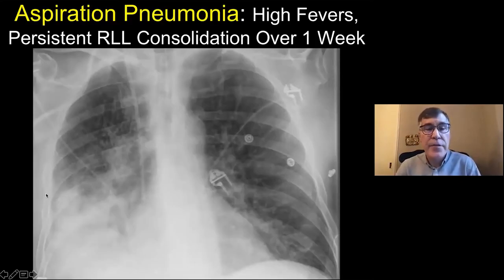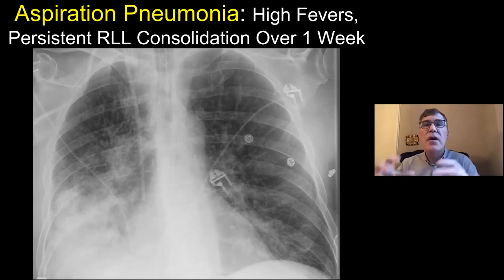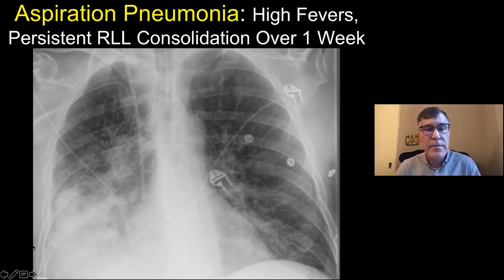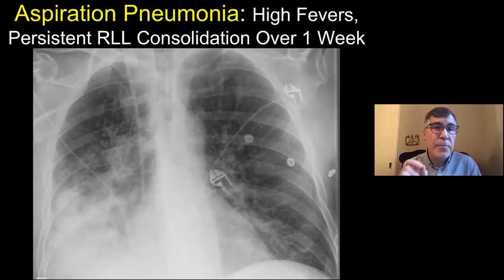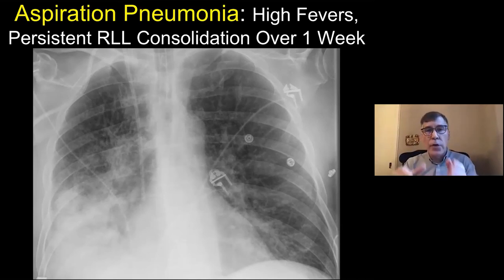Another patient with high-grade fevers: remember, aspiration pneumonitis gives you low-grade fevers, atelectasis gives you no fever, and aspiration-based infectious pneumonia gives you high-grade fevers. That can be a useful way to differentiate the three. That's a big consolidative aspiration-based pneumonia. Word of advice: aspiration pneumonia is almost always gram-negative bacteria. The so-called anaerobic etiology was from the 1950s with Skid Row bad dentition — we don't see that as much anymore. Aspiration pneumonia should equal gram-negative bacteria like Pseudomonas.